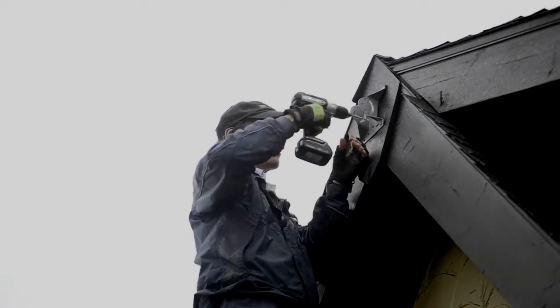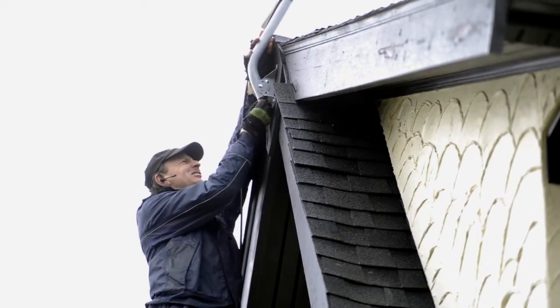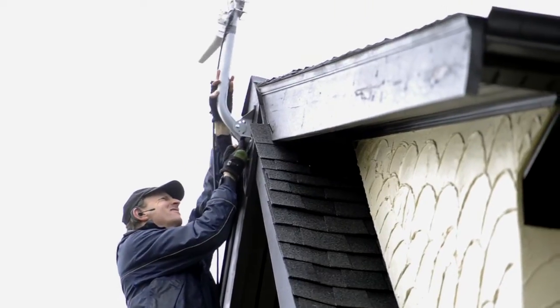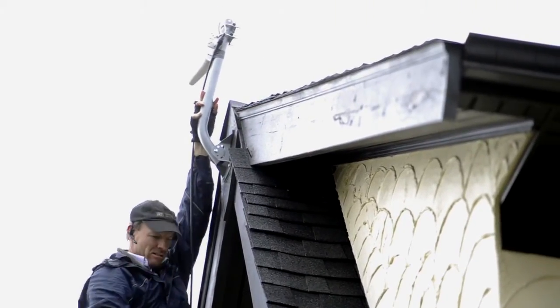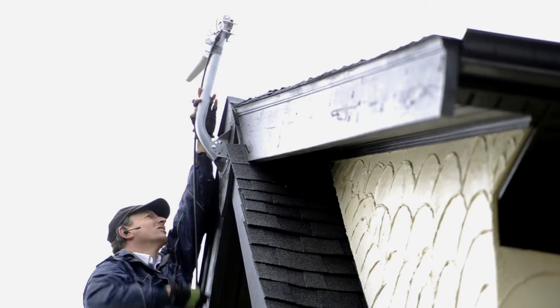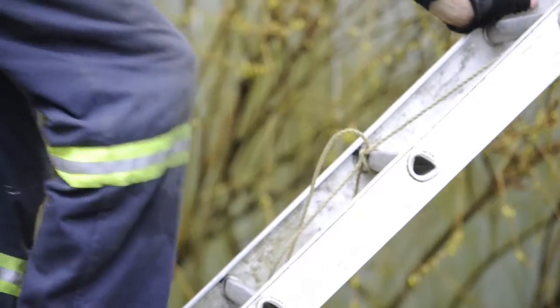In this particular instance, you can see the installer has chosen to mount the Yagi antenna at the peak of the roof. He's using a J-mount, which is a mount typically used for satellite TV installations, but it works really nicely for the Wilson Yagi antenna.